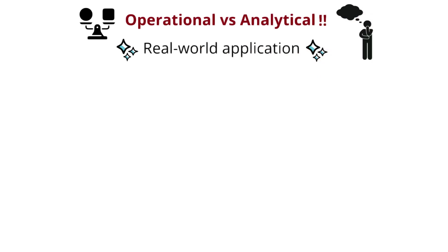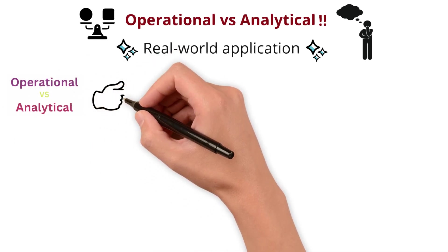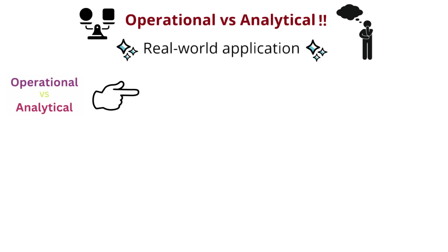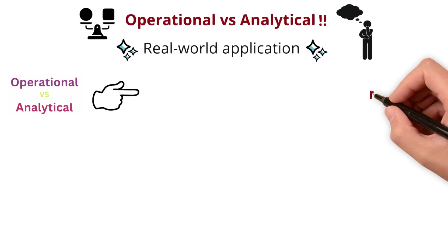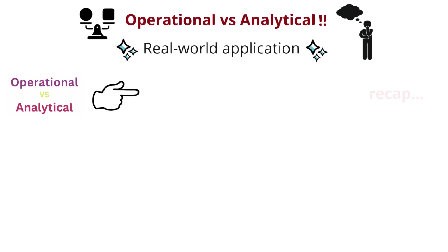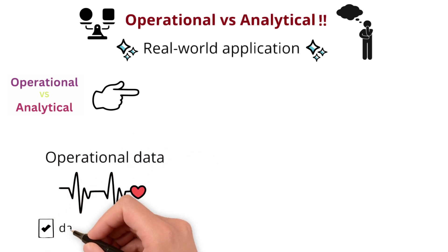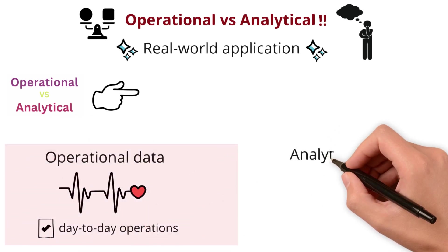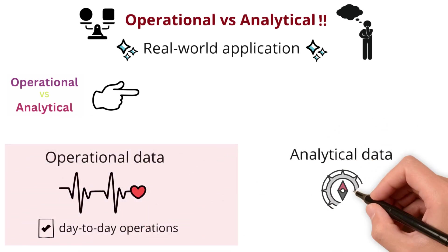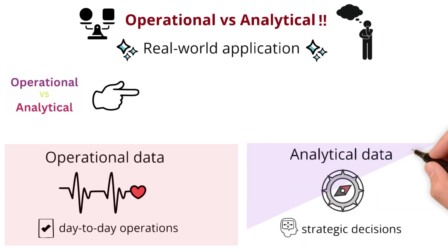But before we dive in, if you missed our breakdown of the fundamental differences between these two, check it out — it'll lay the groundwork for what we're about to explore. A quick recap: operational data is the heartbeat of real-time transactions ensuring seamless day-to-day operations. In contrast, analytical data acts as a compass to drive intelligent strategic decisions by delving into historical performance.